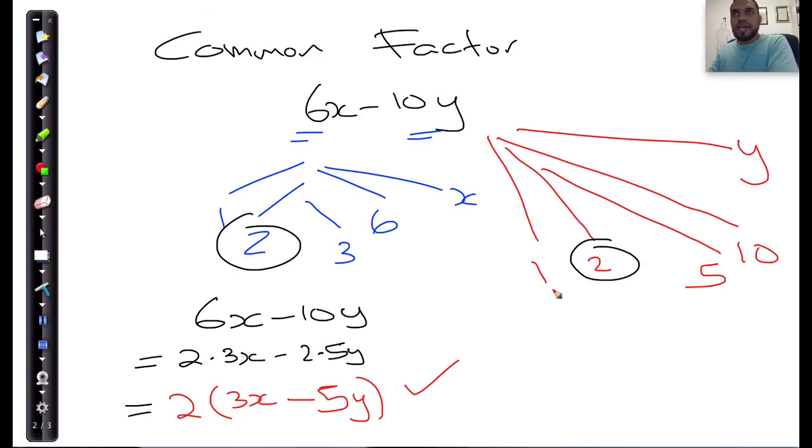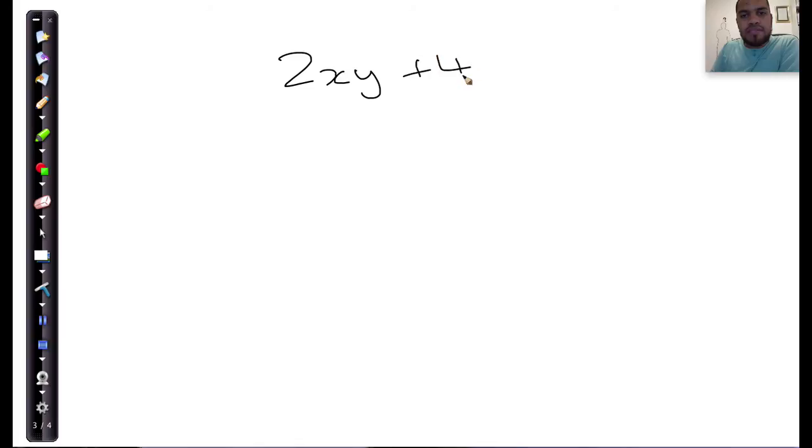So we did it the long way. I'm going to do one more the long way, and then we're going to look at it in the short way. Let's take 2xy plus 4x.